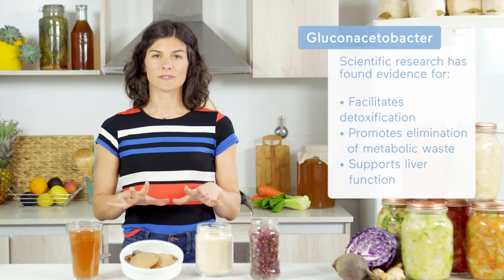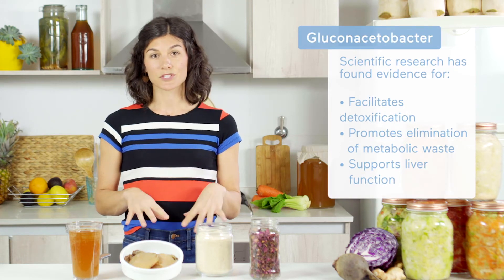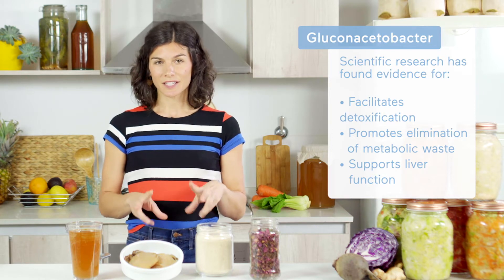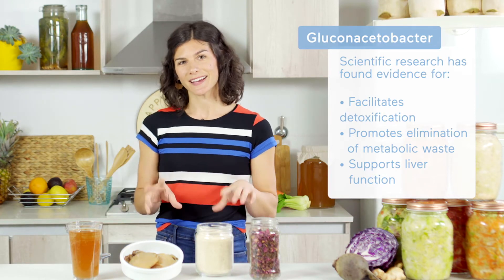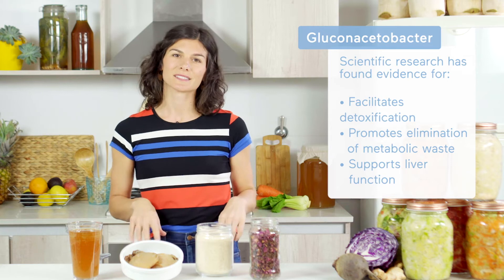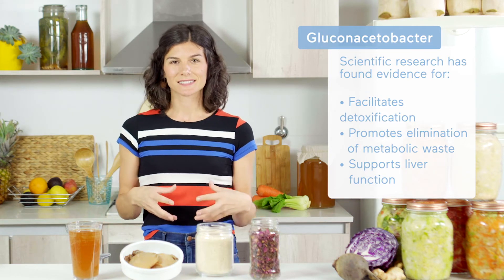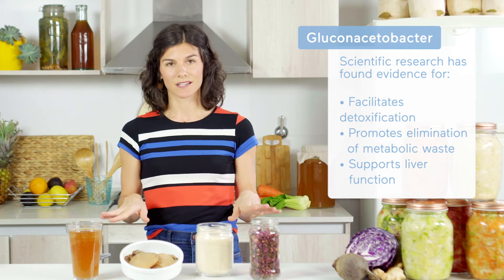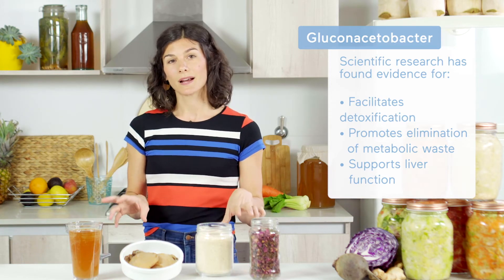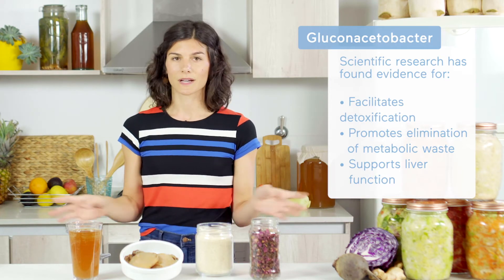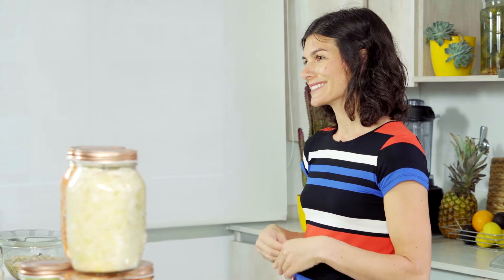Another species of Acetobacter found in kombucha is Gluconacetobacter. Gluconacetobacter creates glucaric acid, which is known for its detoxifying properties. Glucaric acid binds toxins in the stomach and removes them through the urine. This important process rids our body of unwanted hormones and environmental toxins, supporting the detoxification process of our major organ systems.